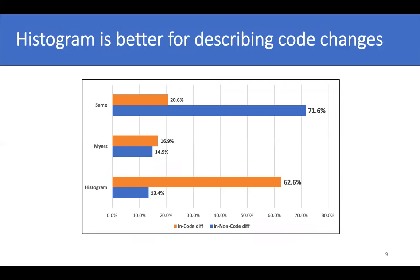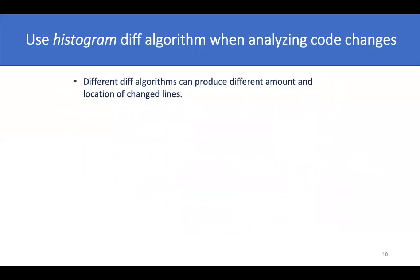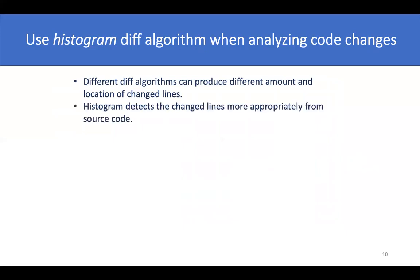The result of our manual investigation on patches shows that the histogram algorithm provides better outputs compared with Myers in describing the code changes from source code files. But they have almost the same ability to extract the diff from non-code changes, for example, the changes of a text file. Our qualitative analysis has shown that different diff algorithms can report different amounts of change lines and identify different change locations, and our qualitative investigation reveals that histogram is better for describing code changes.